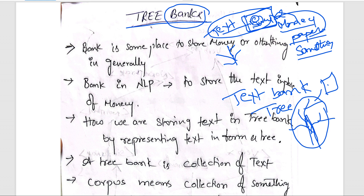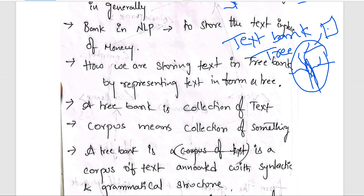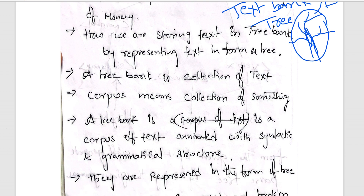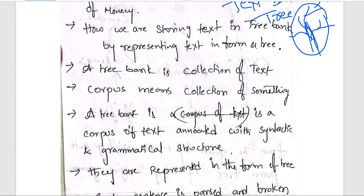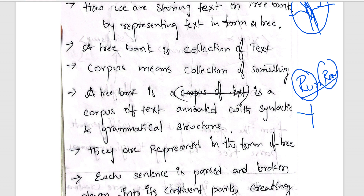A simple example: a tree bank is nothing but a collection — a corpus of text. Corpus of text means a collection of all the data, all the text, annotated with syntactic and grammatical structure. For example, words like 'run' and 'ran' can be represented based on their syntactic and grammatical structure in the form of a tree.